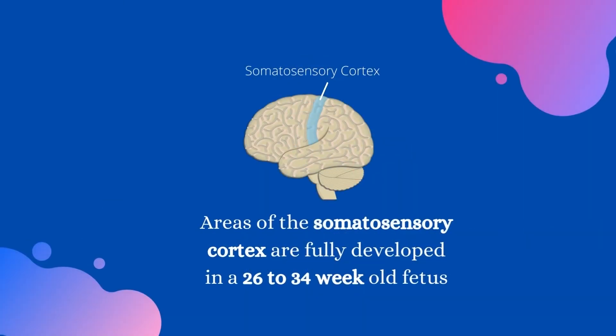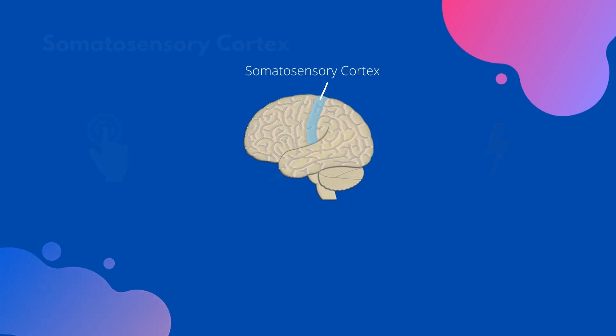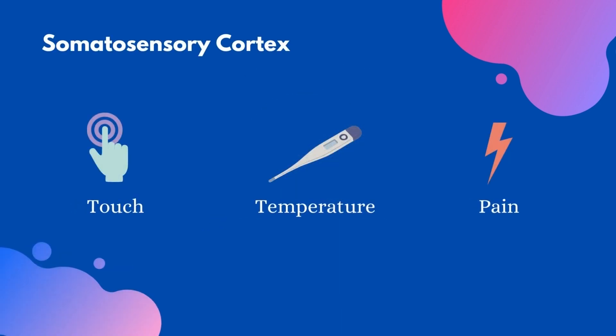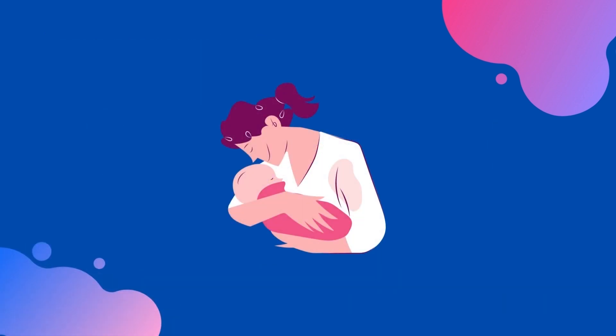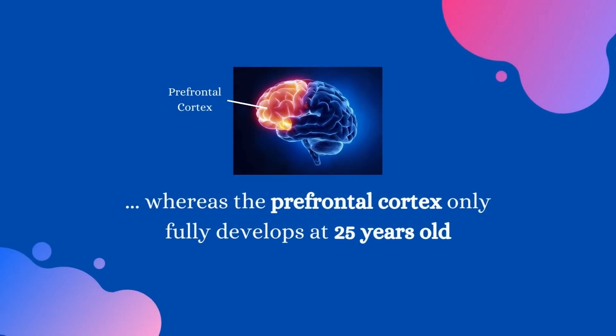These neural connections occur at different parts of the brain at different times during development. The areas of the somatosensory cortex are fully developed in a 26-34 week-old fetus. The somatosensory cortex is responsible for processing sensory information such as touch, temperature, and pain. This part develops early because the baby needs to receive and process sensory information from their caregivers. On the other hand, the prefrontal cortex only fully develops at 25 years old, which is much later than adolescence.